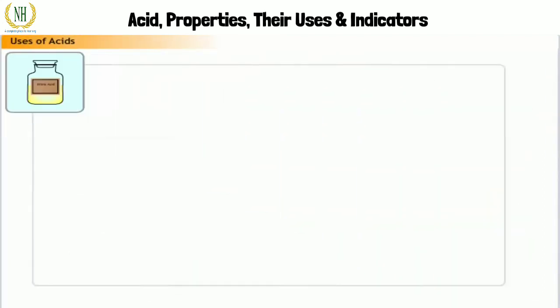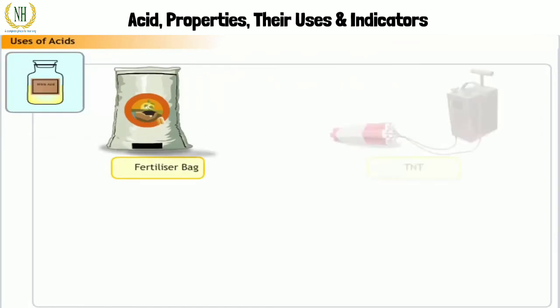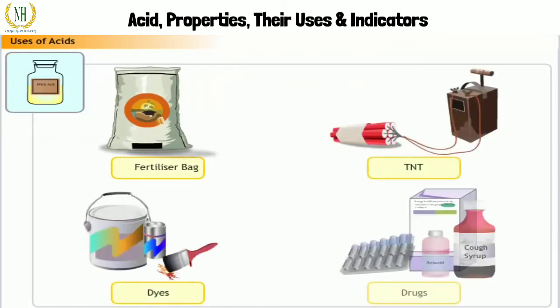Nitric acid is used in the manufacture of fertilizers, explosives like TNT, dyes, and drugs.